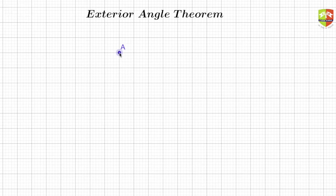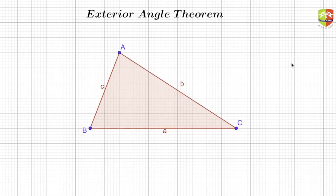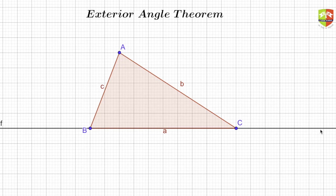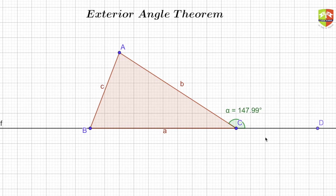First, I'm drawing a triangle ABC. Now I'm going to extend BC — drawing a line from B through C and beyond, marking a point D on the extended line. I'll measure angle DCA, and you can see it comes out to be approximately 147.99 degrees.